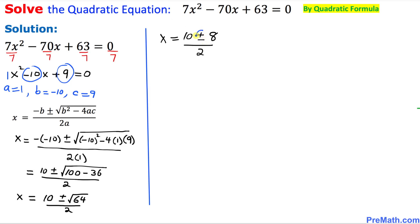Now we have two signs as you can see, positive and negative. I am going to split them. First is going to be 10 plus 8 divided by 2. The other part is going to be 10 minus 8 divided by 2.